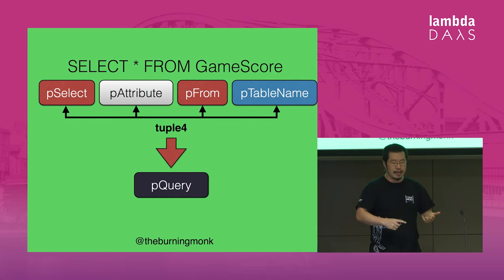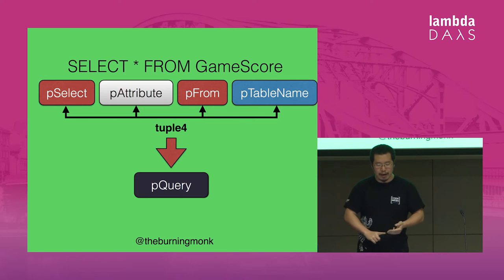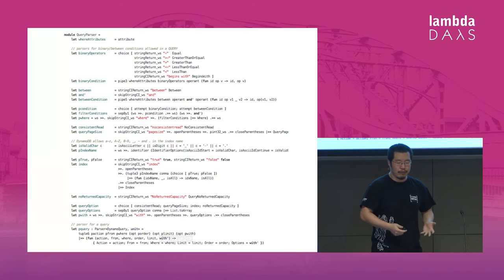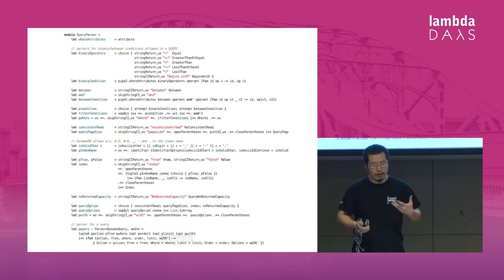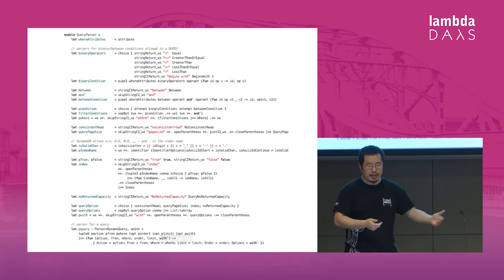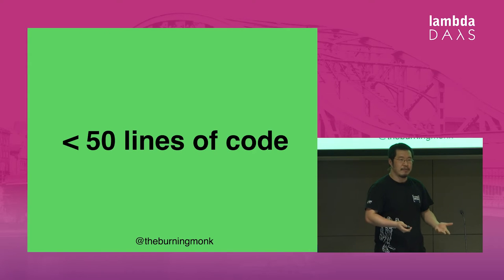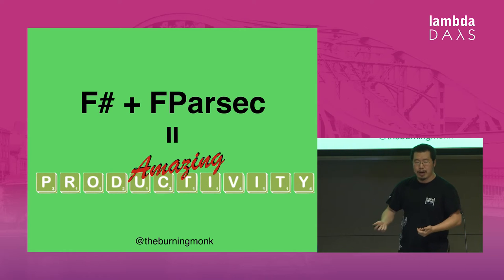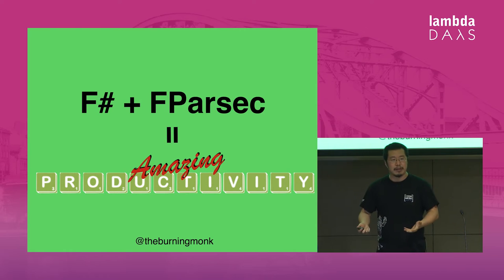Of course, I can then incrementally add support for WHERE clauses, ORDER BY, LIMIT, and WITH. Once I had a number of basic parsers, I was able to write a parser for the whole DynamoDB query syntax in less than 50 lines of code, which demonstrates how much productivity you can get from using F# and FParsec when it comes to creating parsers.